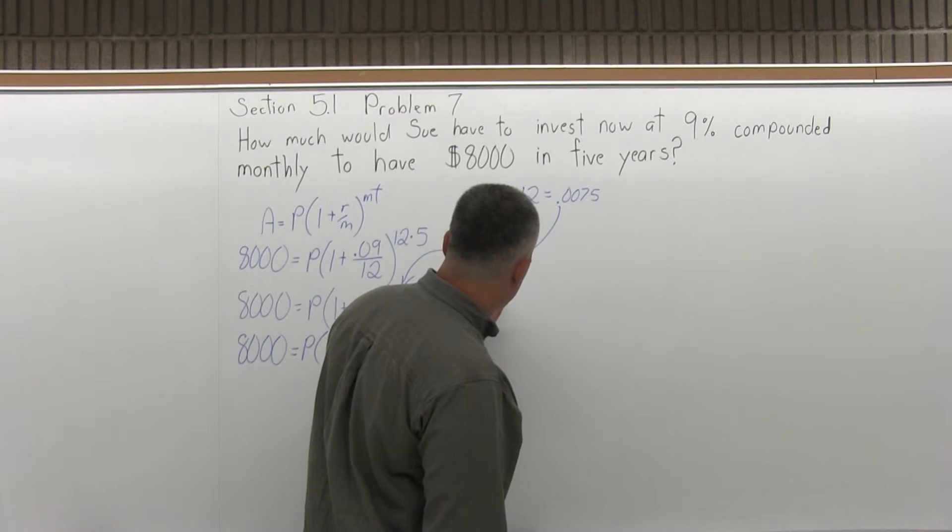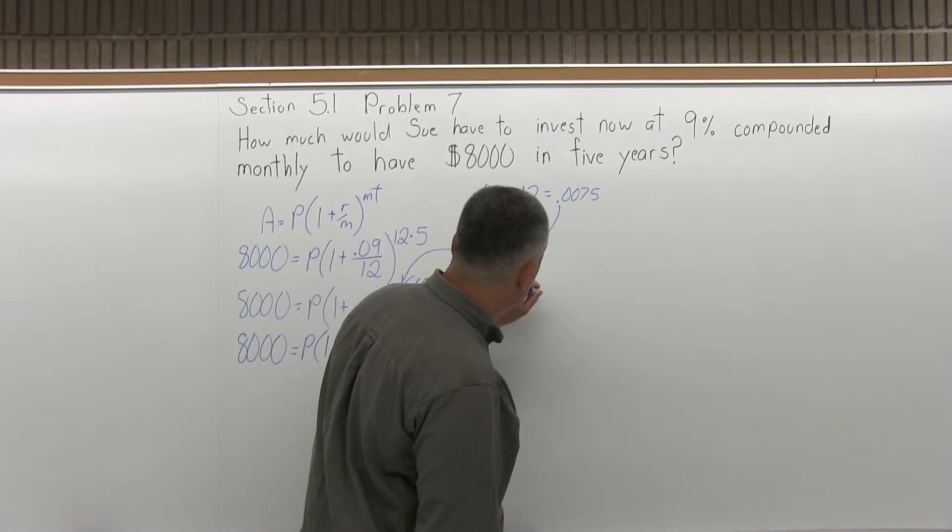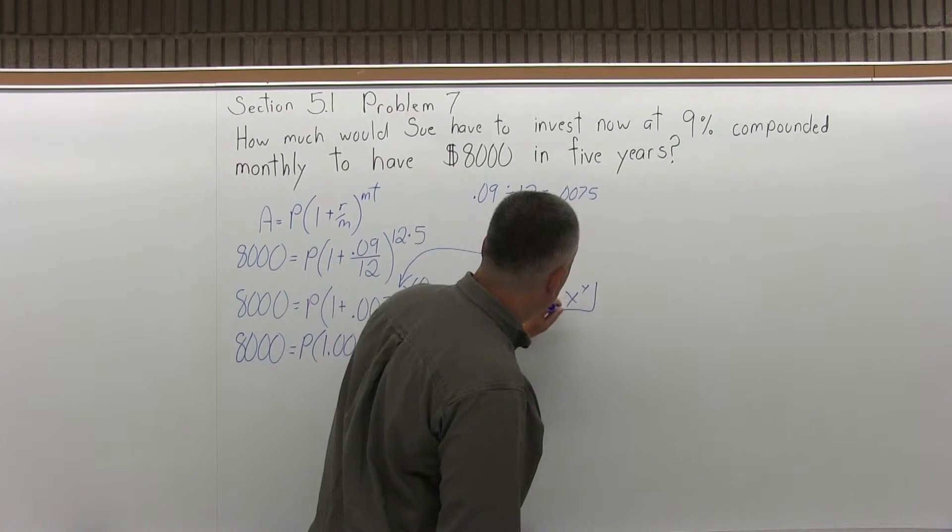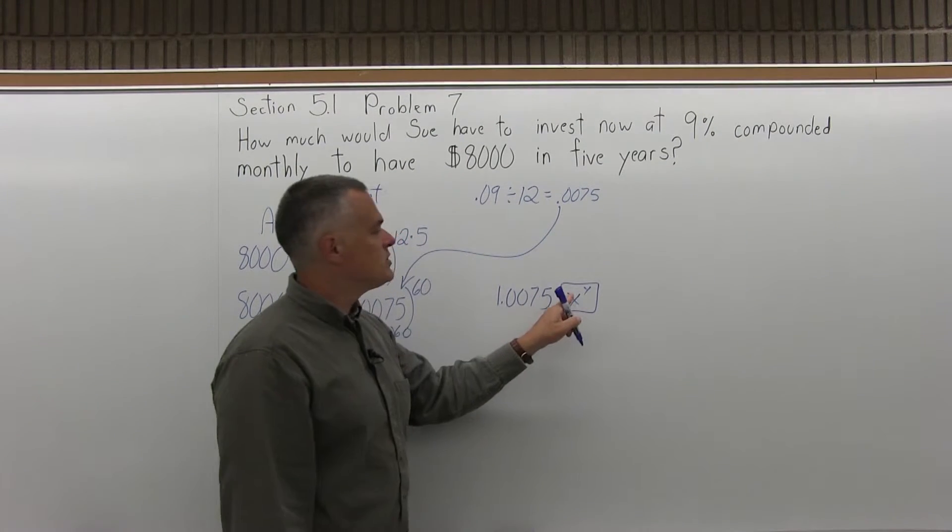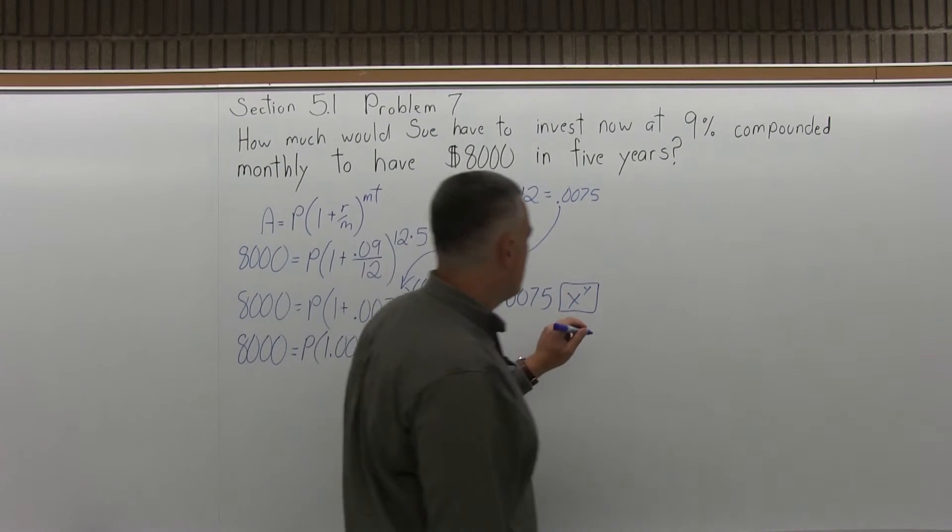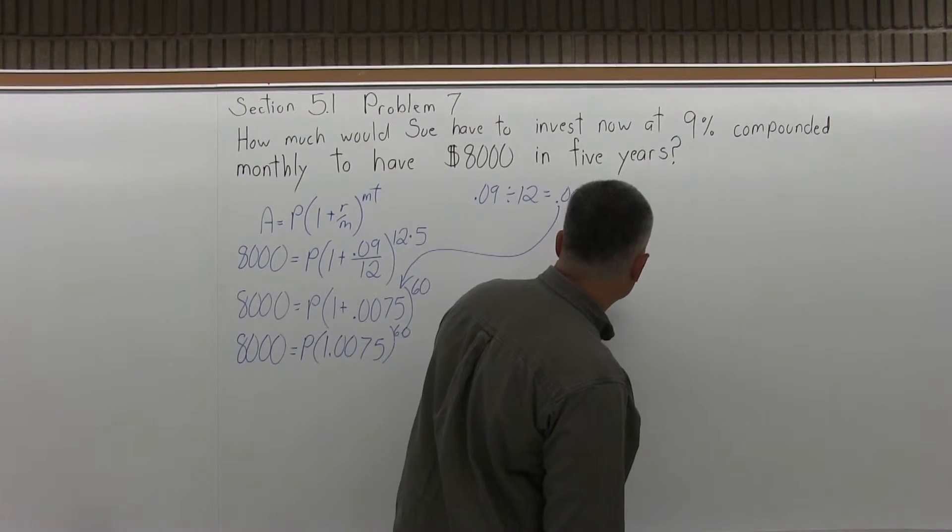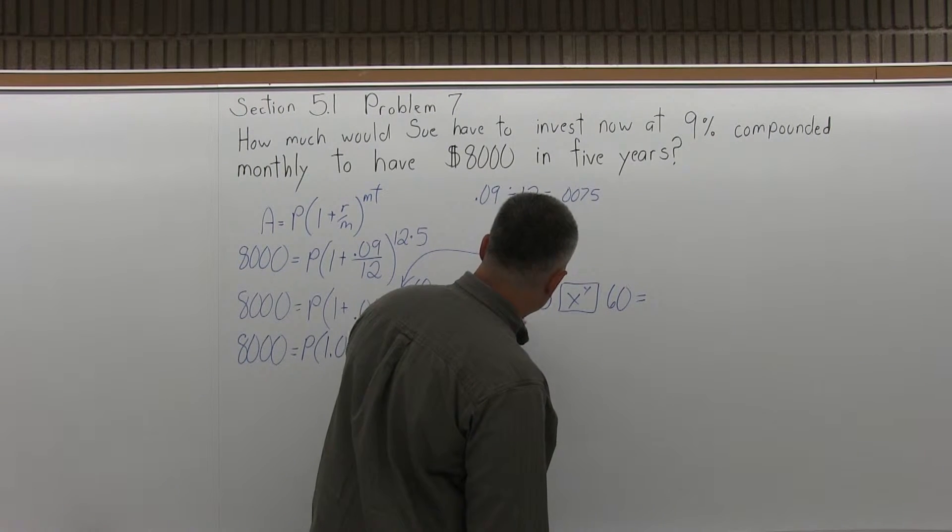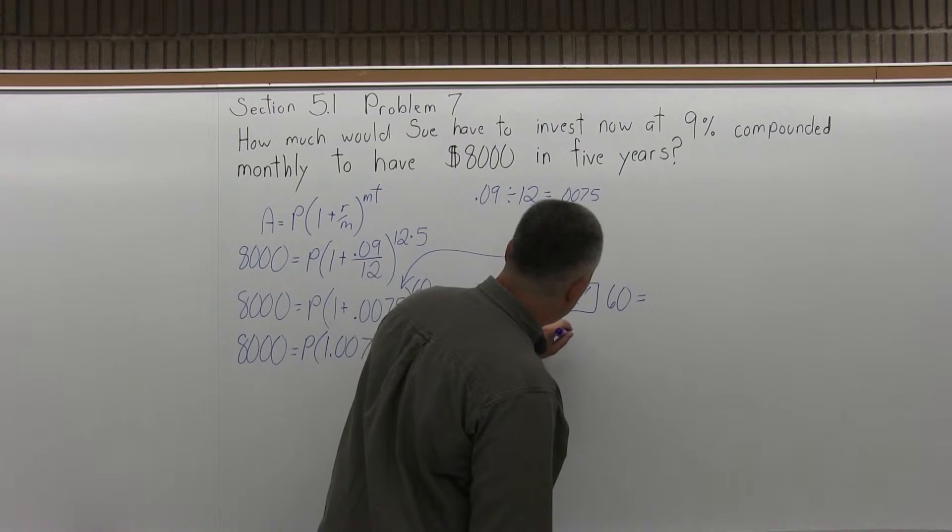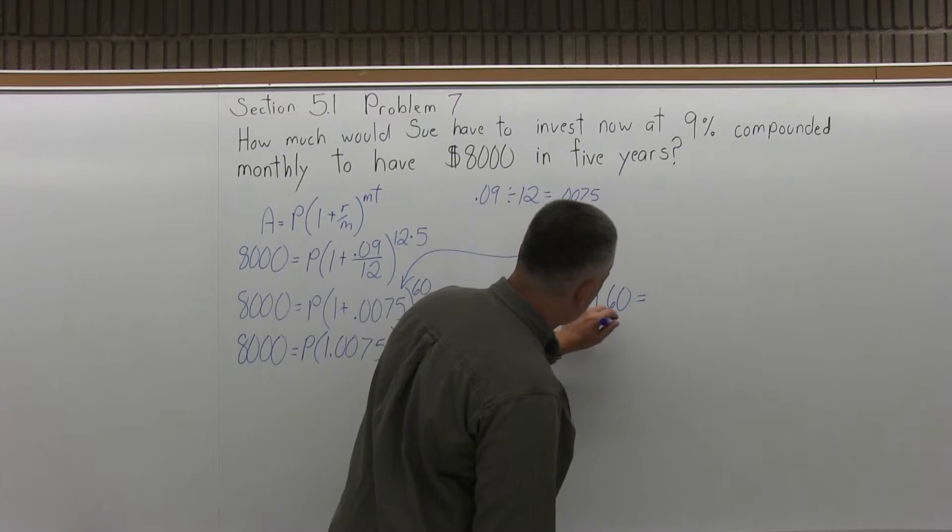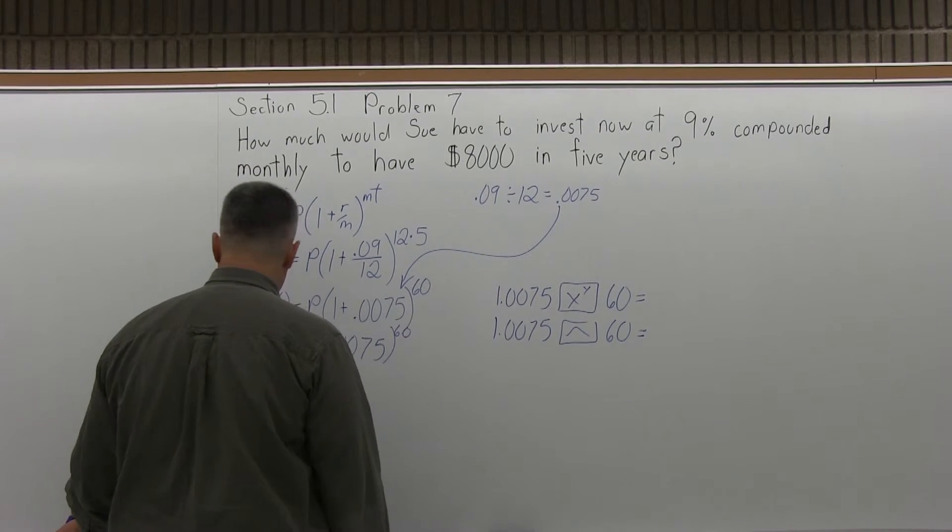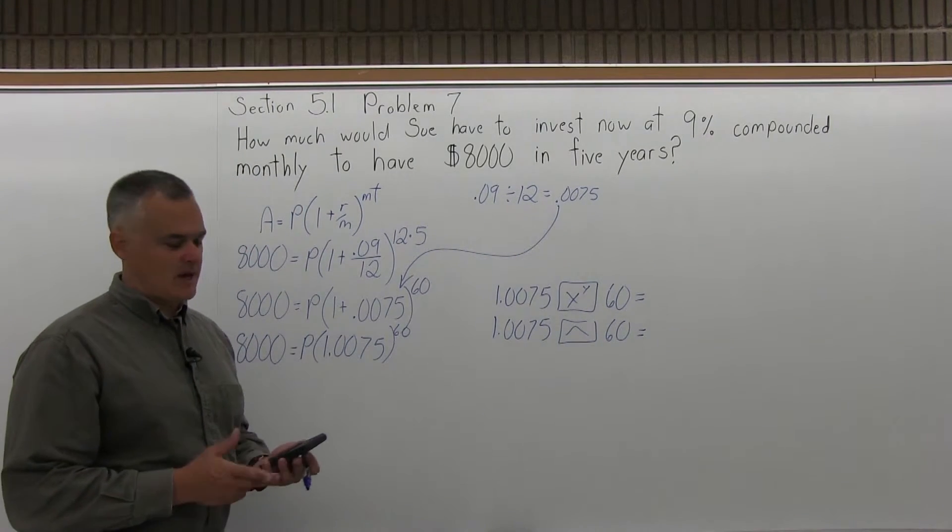That needs to be done on a calculator. So with my calculator, I would put in 1.0075, and my exponent button is a button that looks like x with a superscript of y, x to the y power, and then I enter my exponent of 60 and press equals. On some calculators, the exponent button looks like an arrow that points up, they call it a caret. It would most likely be one of those two buttons. I can't even begin to estimate that.